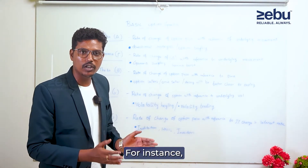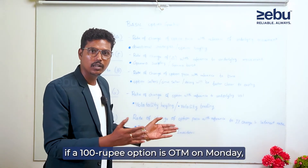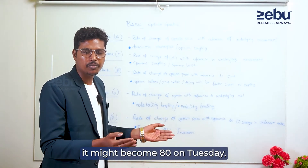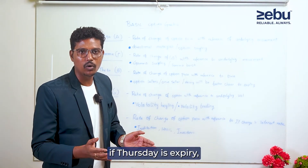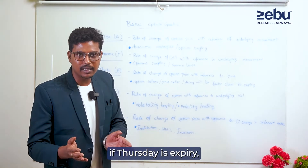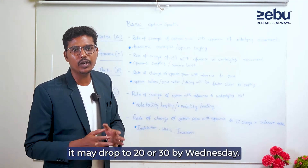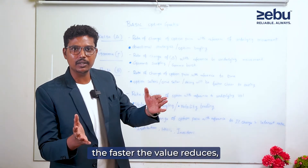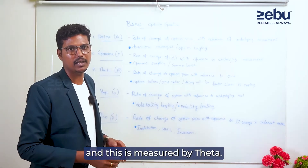The time value — when we measure the option — any decay is faster near the expiry date. Closer to expiry, the value is lower. For example: Monday the OTM option is worth 60, Tuesday it is 60, Thursday is expiry, Wednesday it drops to 30. Closer to expiry, the value is lower. That is theta.